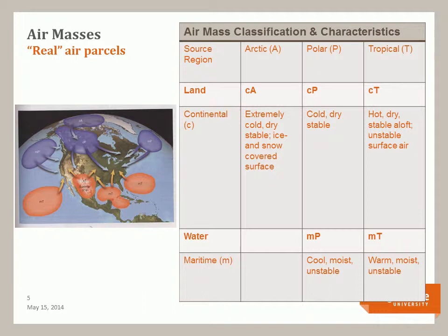Clearly the Arctic and polar masses dominate during the winter months, and the continental tropical is a summer phenomenon that is responsible for the rainy monsoon season in the southwestern United States. Air masses that form over water are called maritime. These include maritime polar — cool, moist, and unstable — and maritime tropical — warm, moist, and unstable. Now we'll look at examples of each of these air masses.